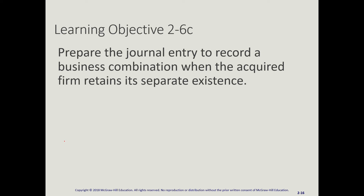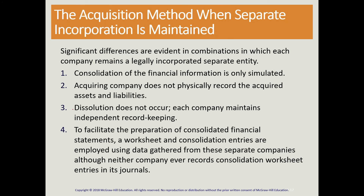We now prepare the journal entry to record a business combination when the acquired firm retains a separate existence. The first situation had either the buyer or seller dissolve, leaving one surviving company. The second situation is where both companies continue to exist, and therefore we must consolidate the financial statements. No dissolution occurs; we still have two separate entities and these consolidated financial statements are prepared for distribution to third-party users.